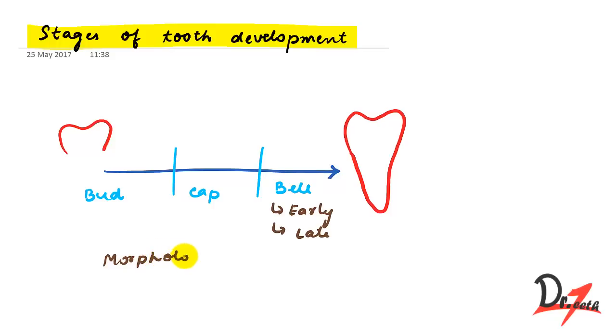These are the morphologic stages. We call it the morphologic stages because this is based on the appearance. Morphologic means appearance. So based on the appearance, for example, if it looks like just a bud we say it is a bud stage, then it looks like a cap so we name it the cap stage. In the bell stage it looks like a bell. That is why we have divided on the appearance into bud stage, the cap stage, and the bell stage.